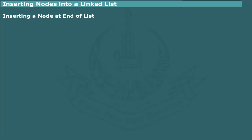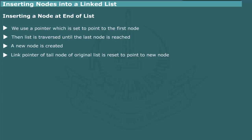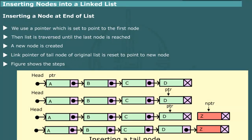Inserting a node at the end of the list. In order to add a node at the tail, we use a pointer which is initially set to point to the first node. Then the list is traversed until the pointer points to the last node. A new node is created and the link part of the tail node of the original list is reset to point to the new node. Figure shows the steps for inserting a tail node.